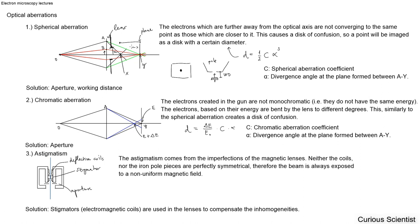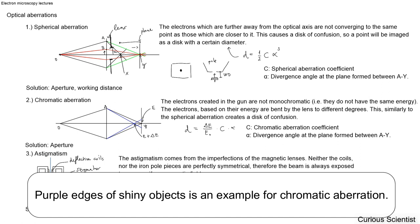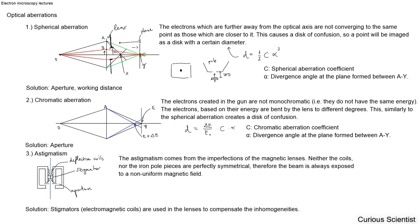The next type of aberration is the chromatic aberration. Similarly to the previous one, this also appears in traditional optics — so if you have a camera, you can meet these kinds of optical errors as well. It's a very nice relationship between the light optical and electron optical phenomena.